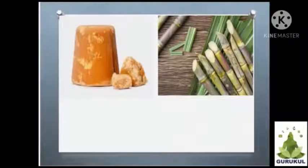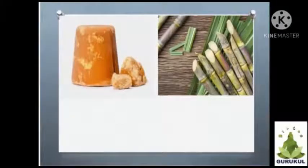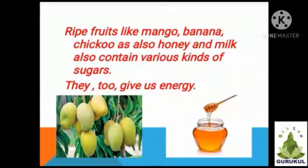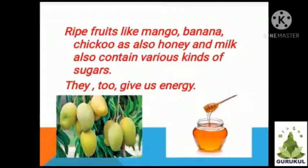We can obtain jaggery and table sugar from sugarcane because it contains a sugar called sucrose. Like that, ripe fruits like mango, banana, chiku, as well as honey and milk also contain various kinds of sugars.